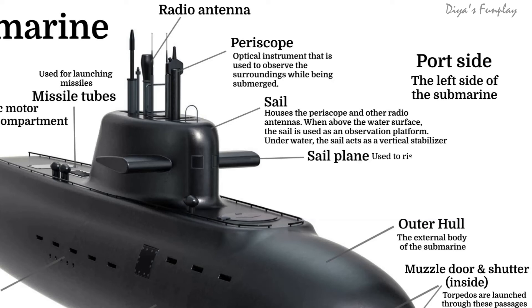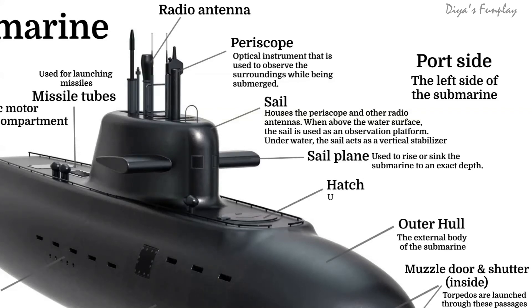Sail plane. This control surface is used to rise or sink the submarine to an exact depth. Hatch — used by the crew to escape in case of emergency.